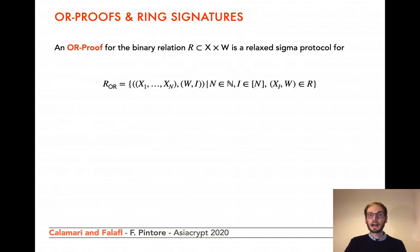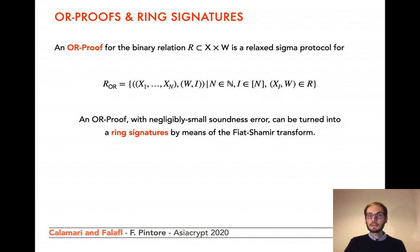An OR proof for the binary relation R is a sigma protocol for the extended binary relation R_OR. R_OR contains pairs where the first component is a list of verification keys X1, ..., Xn, and the second component is a pair composed by a secret key and an index i between 1 and n, such that W is a valid secret key for X_i. By applying the Fiat-Shamir transform, an OR proof can be turned into a ring signature. In particular, V1 is replaced with a hash function and a ring signature is a tuple composed by the commitment, the challenge, and the response. The compactness of the ring signatures produced with a transformed OR proof depends on the response sizes of the OR proof.